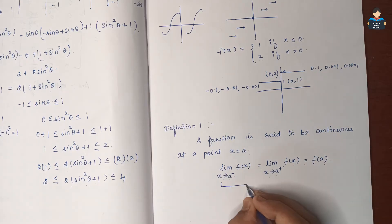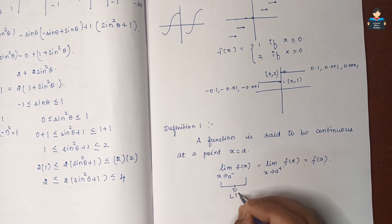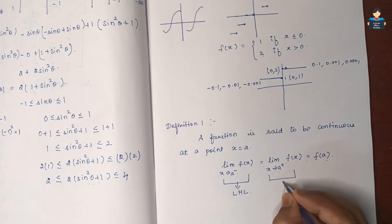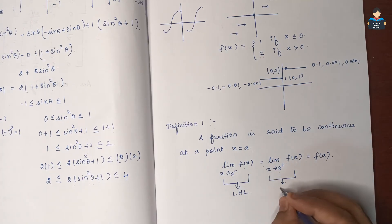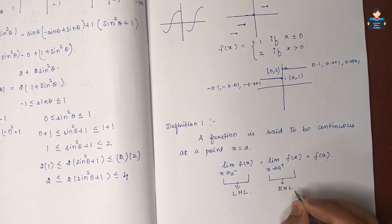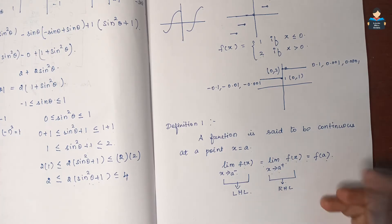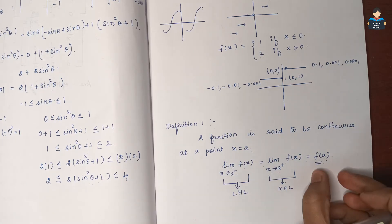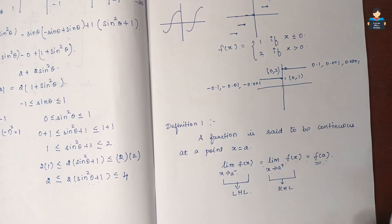That is, the left-hand limit (LHL) and the right-hand limit (RHL) should both be equal to the functional value f(a). If all three are equal, the function is said to be continuous at that point.